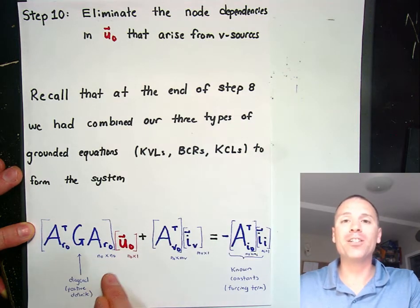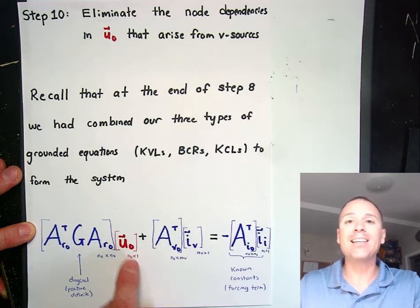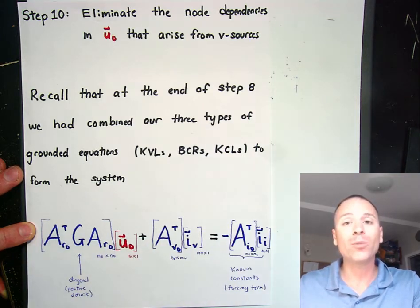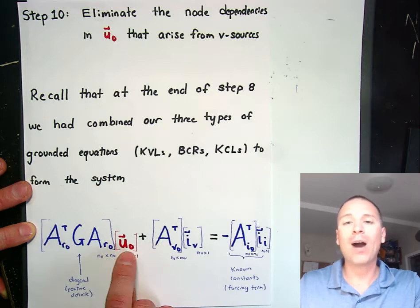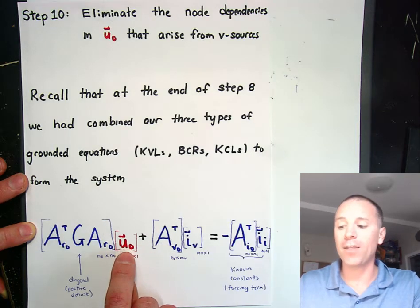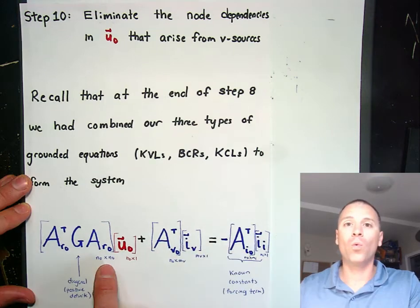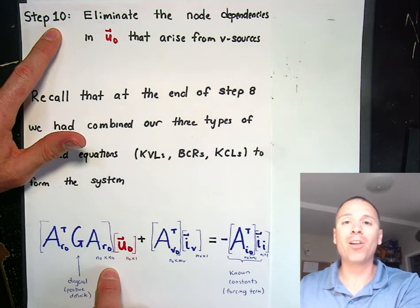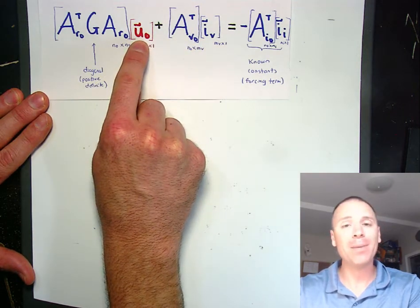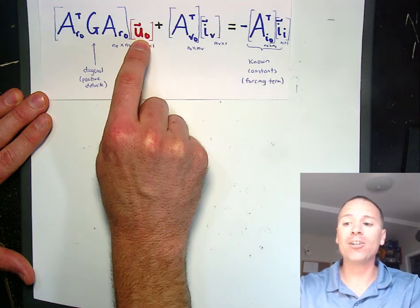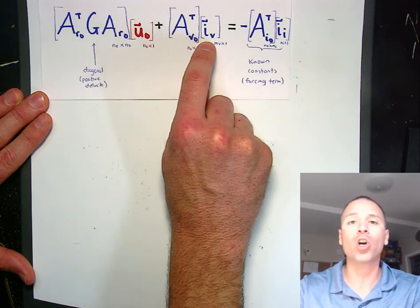In our work to state the linear systems arising in the modified nodal analysis template we actually combined information about the voltage sources to state this in a linear systems. But the work we're going to do in the linear algebraic nodal analysis algorithm is to say we actually know information about the voltage sources that will allow us to eliminate some of the redundant nodes in the node potential vector u sub 0 and eliminate this matrix from this system of equations.